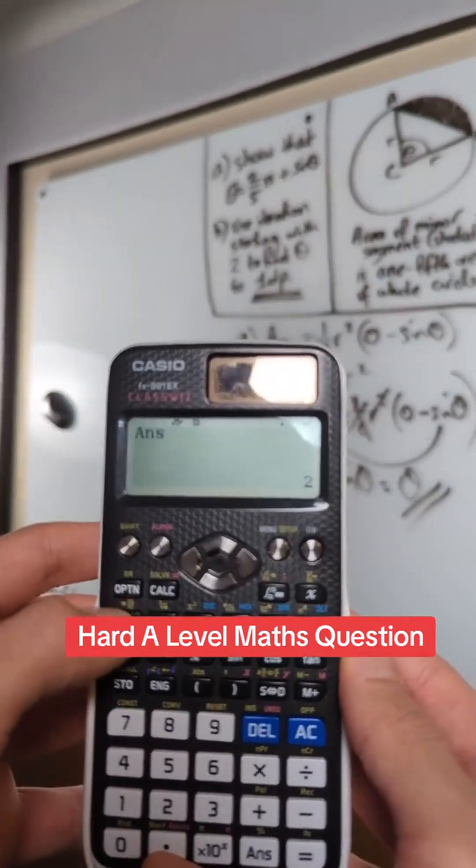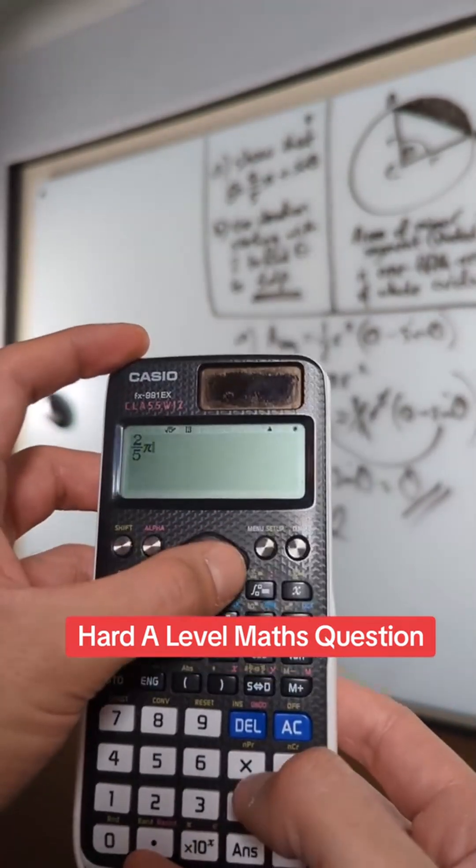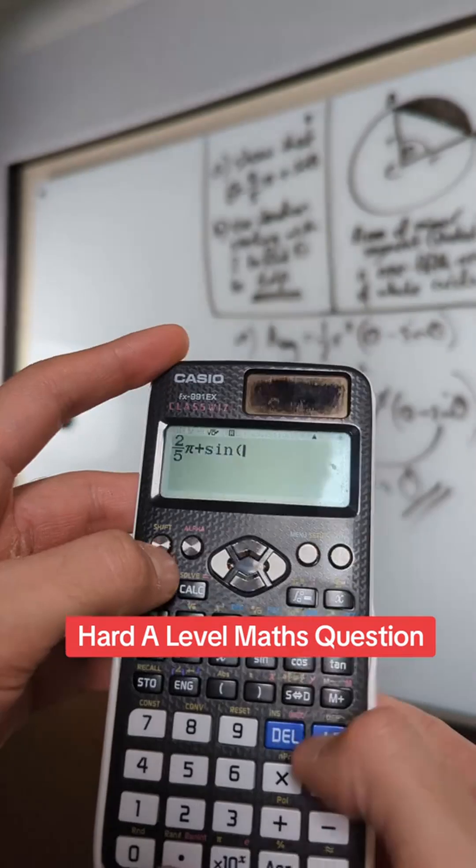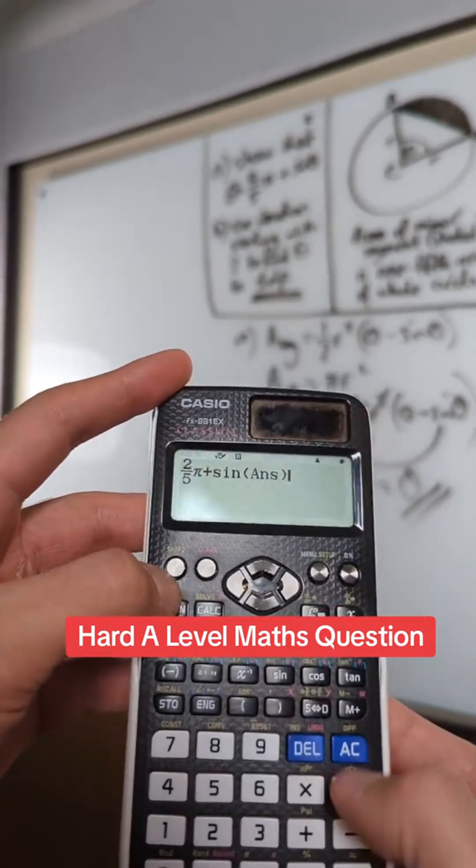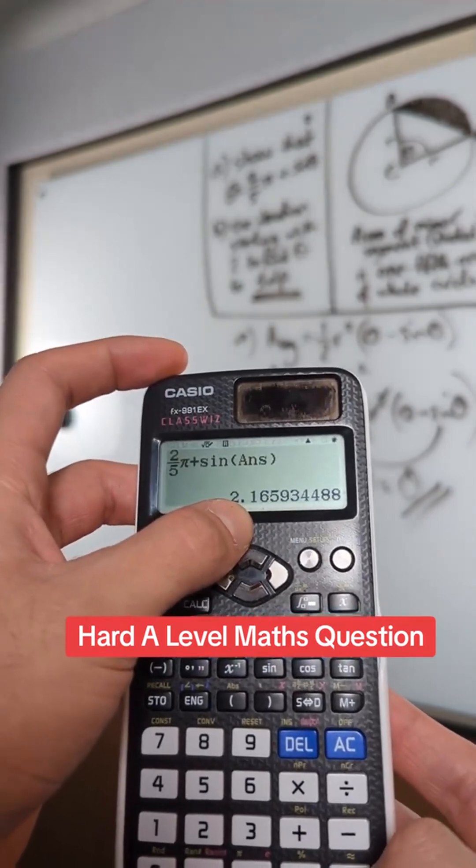It was 2/5π plus sine theta. So sine answer. Now press equals, you get 2.2. You write this down.